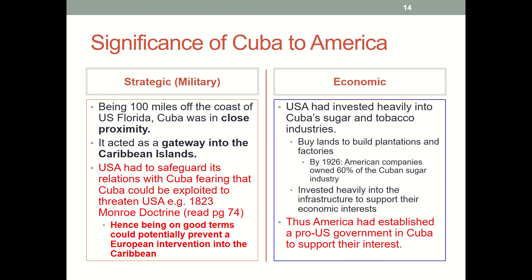Cuba was also very important to the United States militarily. Cuba was just 100 miles off the coast of Florida, making it a gateway into the Caribbean islands. The US had always viewed Latin America and the Caribbean as its backyard and was the dominant power in the region. It was an unwritten rule of US policy that communist states must not be allowed to establish themselves so close to America's borders. The US had to safeguard its relations with Cuba, as reflected in the Monroe Doctrine, which warned imperial European powers against interfering in the affairs of newly independent states or potential American territories.